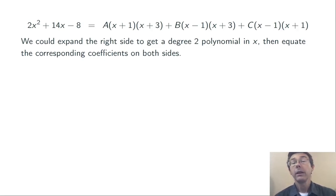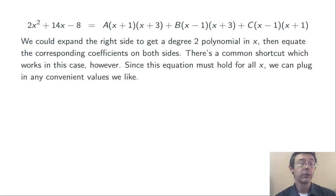Namely, here I have these two polynomials on the left and right that are supposed to be equal, and therefore they're supposed to be equal for every single value of x. We can plug in any value of x that we like on both sides and still get an equality for the correct A, B, and C.